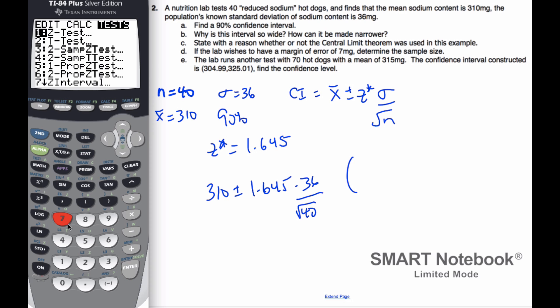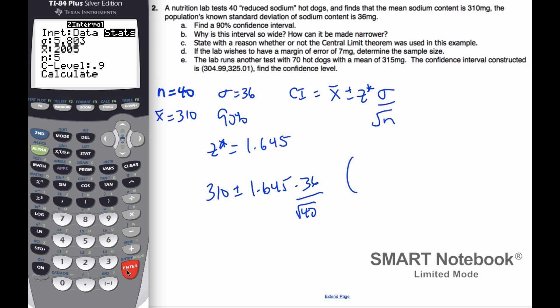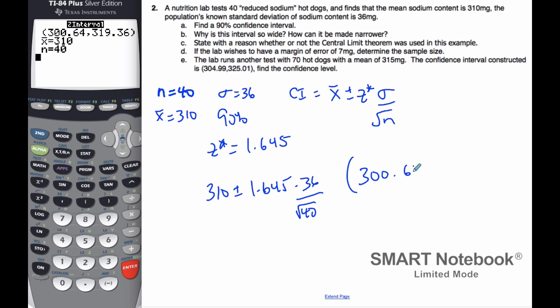Let me try that again. I'm going to do Z interval number 7. I'm going to put statistics in there. I know my standard deviation is 36, the mean is 310, my sample is 40, my confidence level is 90%, and so I get a confidence interval 300.64, 319.36.